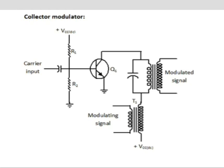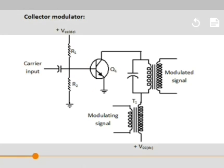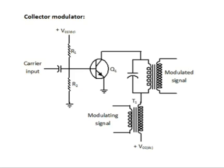In this circuit, resistors R1 and R2 form a voltage divider bias to the base terminal. The combination of LC — that means inductor and capacitor — forms a tank circuit to produce a particular high frequency signal. The signal to be modulated is connected to the class C amplifier through transformer T1, and the secondary winding of T1 connects this modulating signal in series with the collector supply voltage VCC. Thus, the amplitude of the collector current changes with the amplitude of the modulating signal.